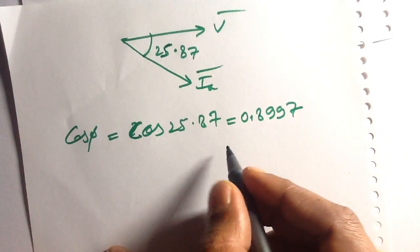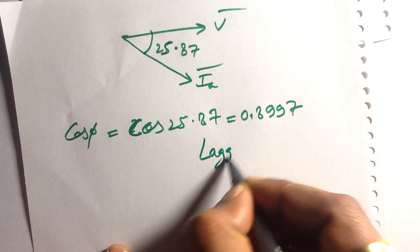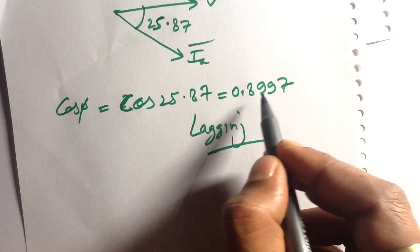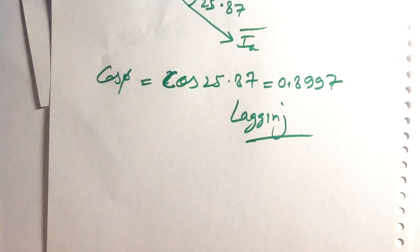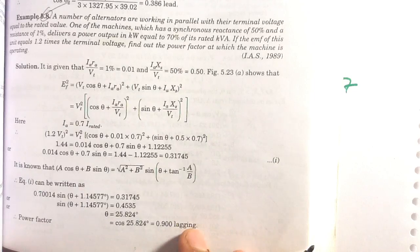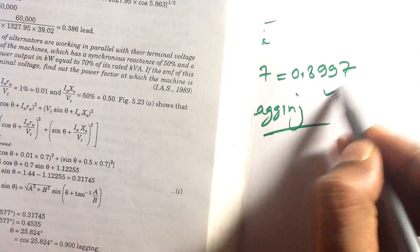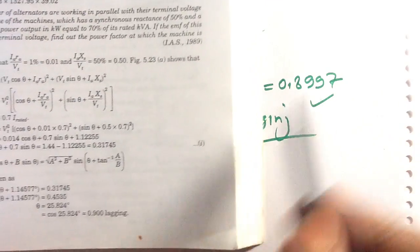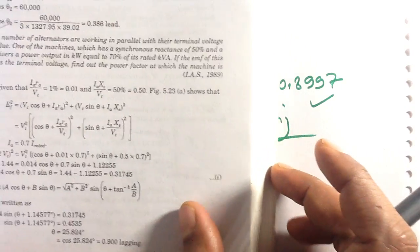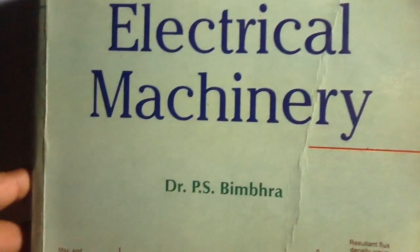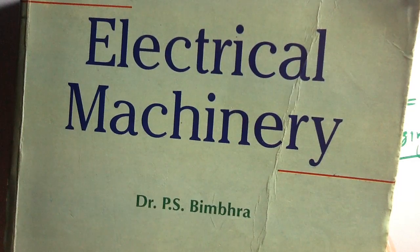Since the current is lagging with respect to the terminal voltage, the power factor is lagging. The alternator is working at a lagging power factor of 0.8997. The printed answer is 0.9 lagging, so there is a small deviation, but the values are approximately the same. This completes Example 5.8 from page 593 of the book 'Electrical Machinery' by Dr. P.S. Bimbhra.